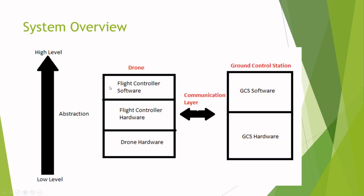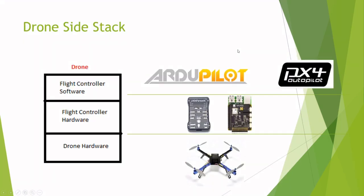Your drone flight control software will not work if you don't have flight control hardware in a drone. Focusing on the drone side, at the lowest abstraction level we have the drone hardware — the elementary drone components. These are things like the motors, the props, the frame, the battery, GPS, ESCs — every component that makes up your basic drone is on this lowest level.